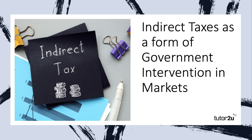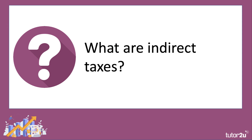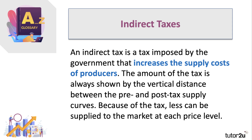Indirect taxes are essentially taxes on spending — taxes imposed by the government on suppliers that increase the supply costs of producers. The level of an indirect tax is always shown by the vertical distance between the pre-tax supply curve and the post-tax supply curve. Because of the tax on the supplier, less can be supplied to the market at each price level.